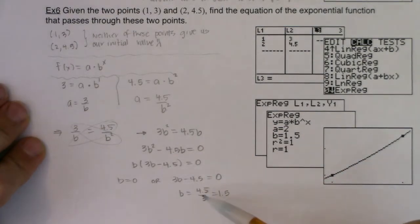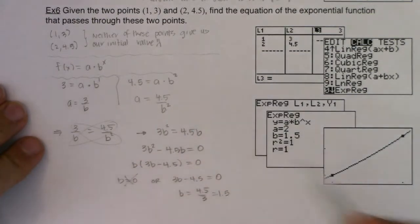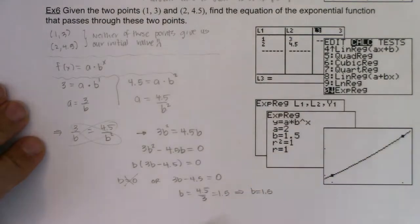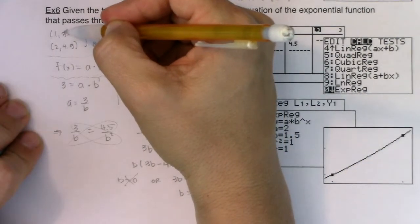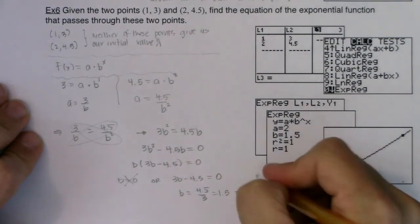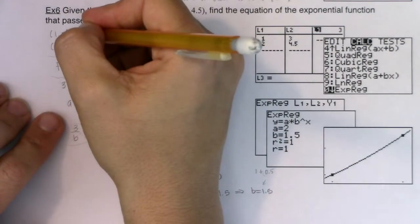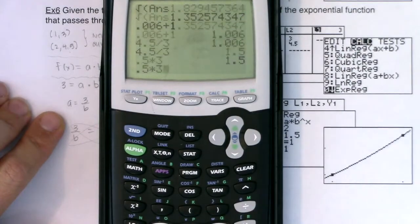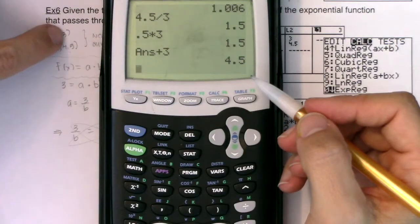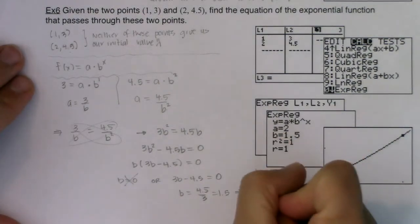So we have to decide which base to choose. Our base in any exponential function has to be a positive number, and 0 is neither positive nor negative, so that's not our base. By default, the base must equal 1.5. That shows exponential growth because the base is larger than 1, which matches what's happening — the y values are growing. A base of 1.5 is like saying 1 + 0.5, or 50% growth. You can see that from 3 to 4.5: if you take 50% of 3 and add it to 3, you get 4.5. So going from 3 to 4.5 over just 1 unit of x is a 50% growth rate.